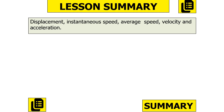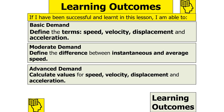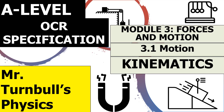That brings an end to today's lesson. We've looked at the concepts of displacement, instantaneous speed, average speed, velocity and acceleration. We can define the terms speed, velocity, displacement and acceleration, distinguish between instantaneous and average speed, and calculate values for speed, velocity and displacement. Thank you so much for watching this lesson on OCR A-level physics, covering kinematics in the subtopic of motion in the module Forces of Motion.